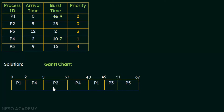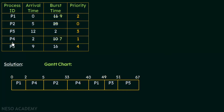At 33 milliseconds, P2 releases the CPU. Among the remaining processes in the ready queue — P1 (priority 2, remaining 9ms), P3 (priority 3, burst 2ms), P4 (priority 1, remaining 7ms), and P5 (priority 4, burst 16ms) — arrival times don't matter since they've all arrived. Among priorities 2, 3, 1, and 4, the highest priority is P4 with priority 1. So P4 gets the CPU next.